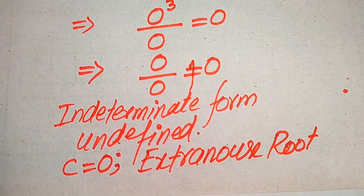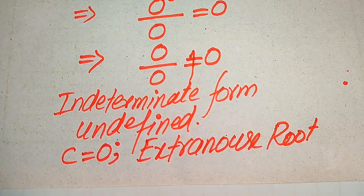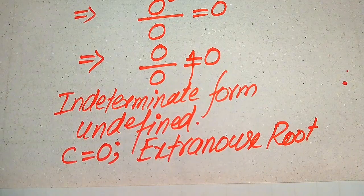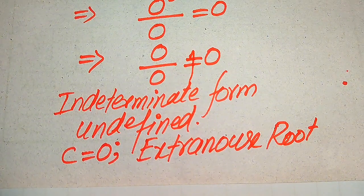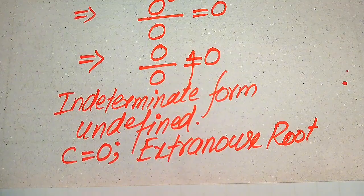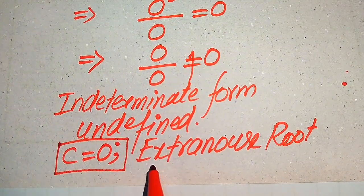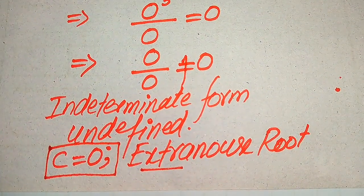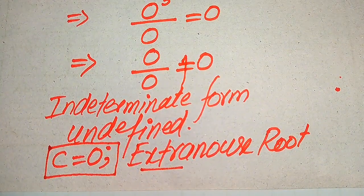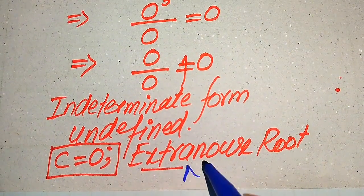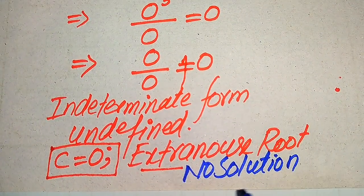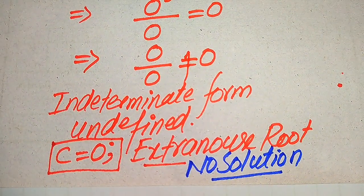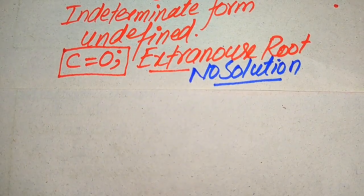Let me explain the difference between a solution and an extraneous root. The root which satisfies the given equation is called the solution of that equation, and the root which does not satisfy the given equation is called the extraneous root. In this case, c equals 0 is the extraneous root, and the final conclusion is that this equation has no solution, because we cannot find any value of c that satisfies the given equation.